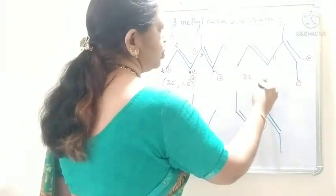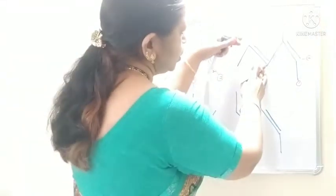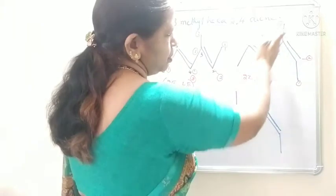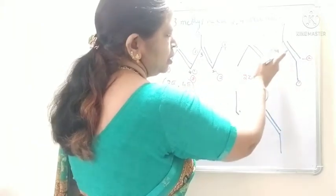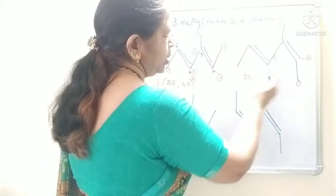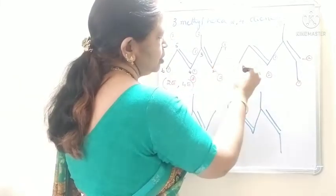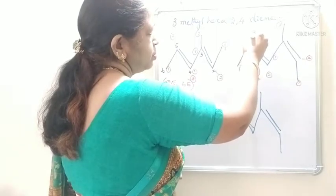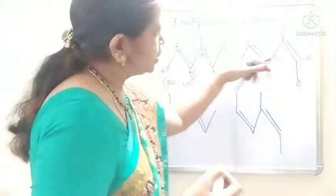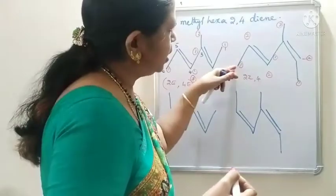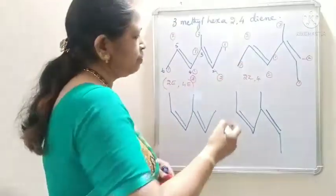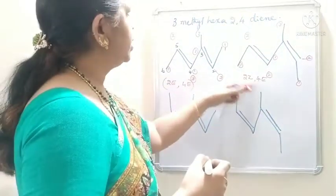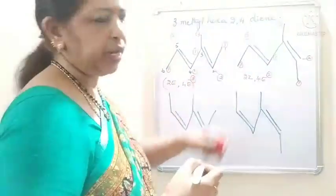Now at fourth carbon, what is the configuration? This entire group is lying on the upside — first preference up — and hydrogen is down, second. And methyl group is on the downside and hydrogen is upside, so second preference. So the first priority groups are lying on the opposite side. What is the configuration? It is 4E configuration. So (2Z,4E)-3-methylhexa-2,4-diene.